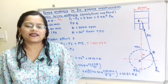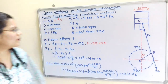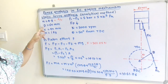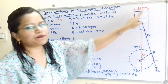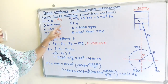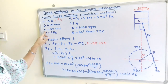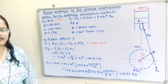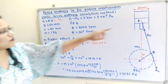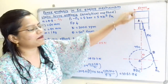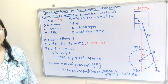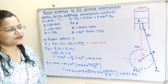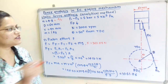Let us understand the given data with the help of a diagram. Obliquity ratio N = 4.5, which is the ratio of L by R. The bore diameter is 60 mm, that is 0.06 m. The crank radius is 40 mm, so OB is the crank and crank radius R = 0.04 m. Mass of reciprocating parts M = 1 kg. Then P1 minus P2: this is the pressure difference mentioned.